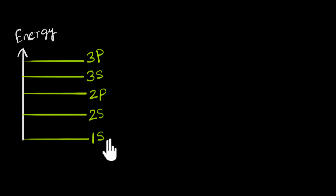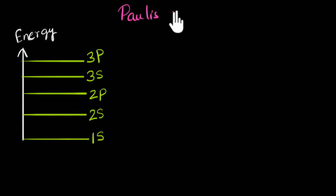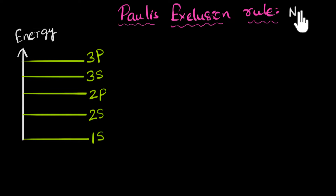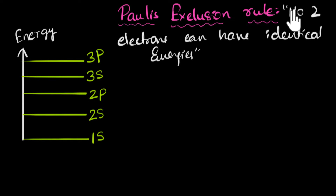If this looks new to you and you have no idea what s and p are, it would be a great idea to pause here, go back and watch the electronic configuration videos on chemistry, and then come back. Electrons cannot fill up these energy levels randomly — there's a particular rule called Pauli's exclusion principle. It simply says that no two electrons can have identical energies.